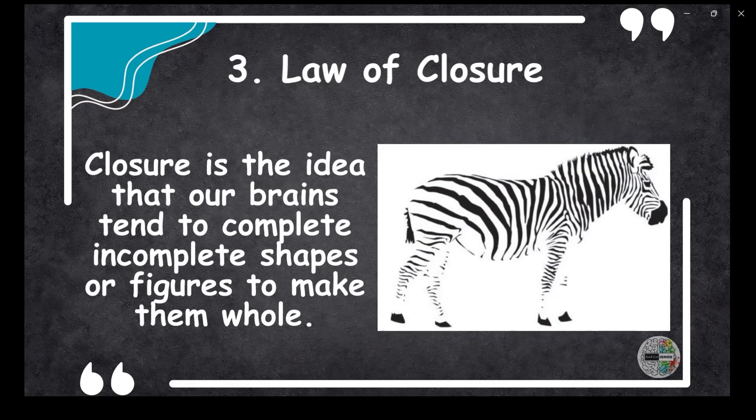Number three: the law of closure. Closure is the idea that our brains tend to complete incomplete shapes or figures to make them whole. For instance, when you see the picture on the right — did you recognize the animal? That's a zebra, by the way.